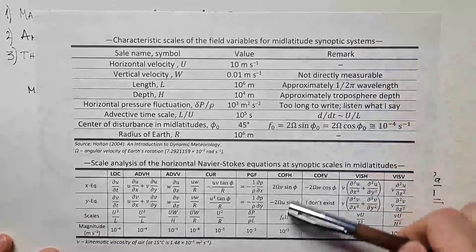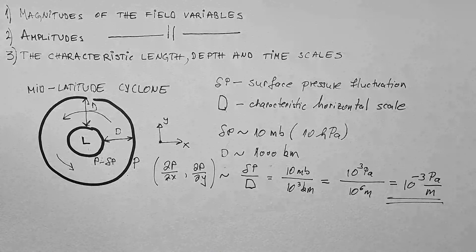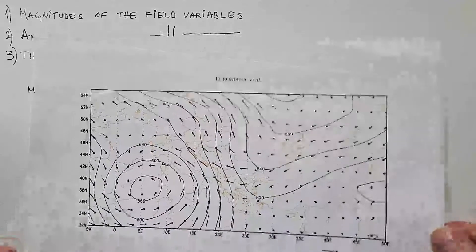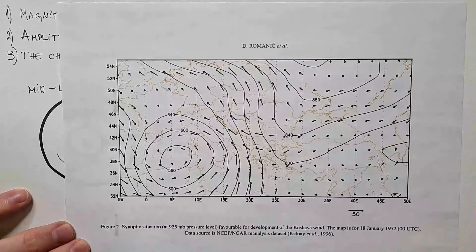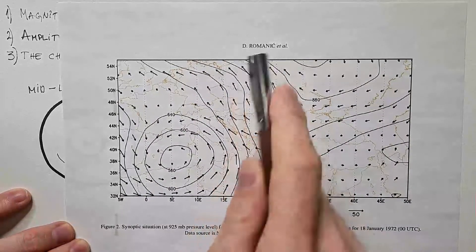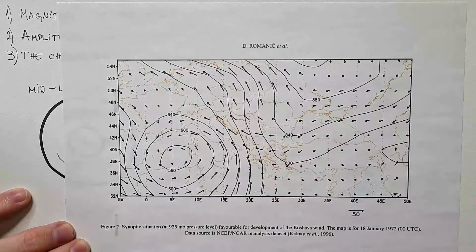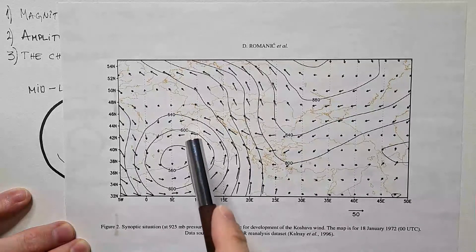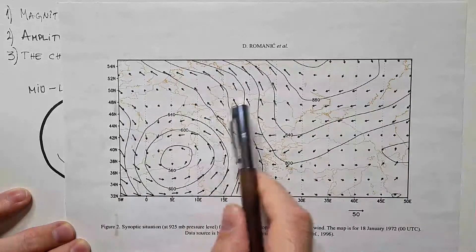The goal for today is to perform scale analysis of the horizontal Navier-Stokes equations at synoptic scales in mid-latitudes. But before we go into explaining these things, I want to show you how mid-latitudes look like. This is from one of my papers, Romanić et al., from 2015, where we analyzed some specific local winds over the Balkans.